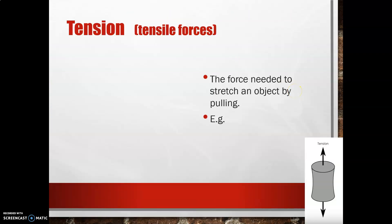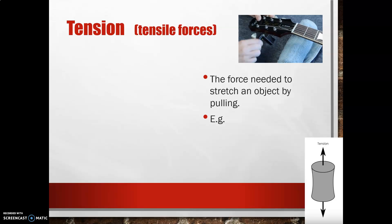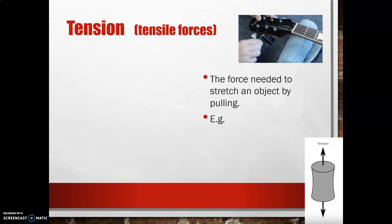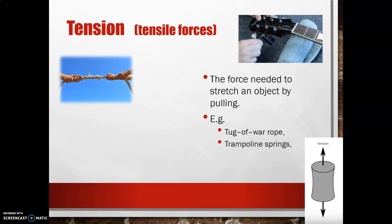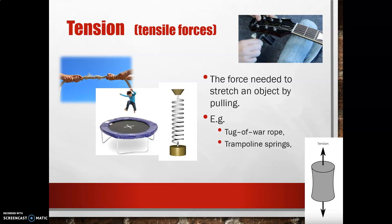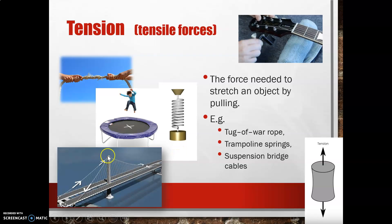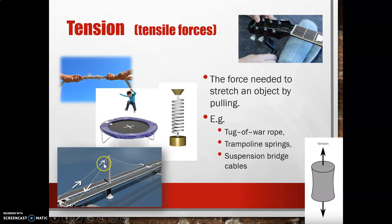Now let's talk about tension. Something has tensile strength when the force is needed to stretch an object by pulling. If you've ever tuned a guitar, banjo, ukulele, or piano, you know you have to pull the wire until it's fairly taut, and that changes the sound. We can think about a tug-of-war rope, a trampoline spring being pulled outwards, and suspension bridge cables. We talked about the pylons having compressive strength and now the cables having tensile strength.